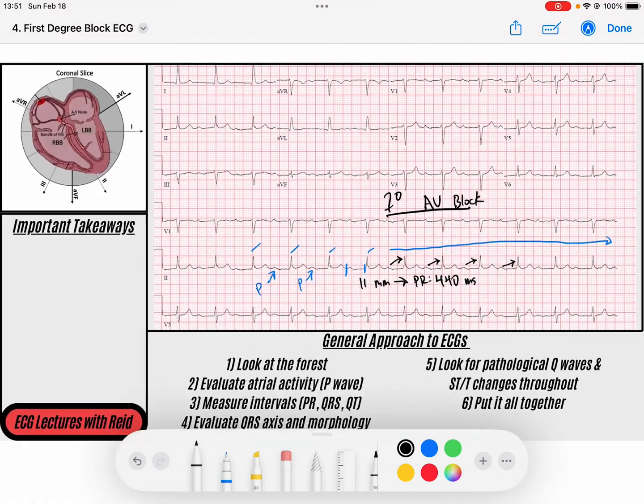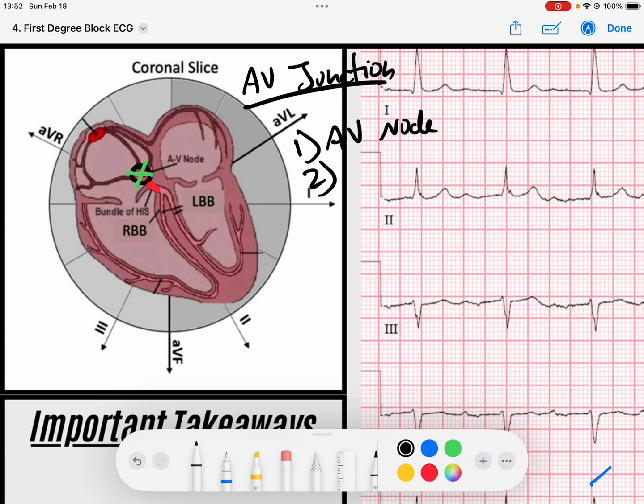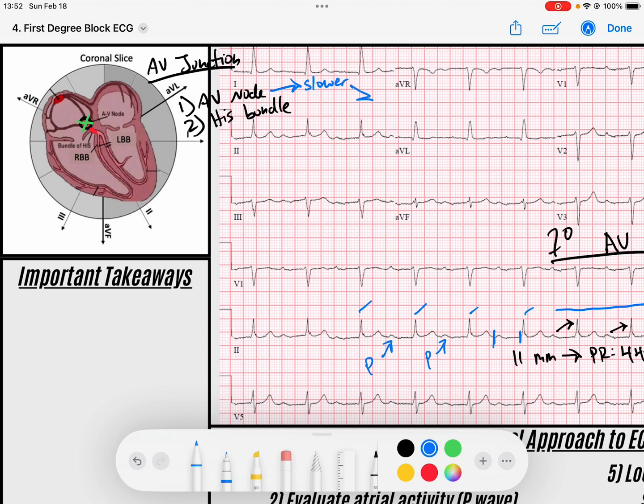So this concept of anatomy where the AV node itself has decremental conduction and this His bundle has all or nothing conduction is going to be really important. So remember the His bundle doesn't slow down the signal when it gets diseased. So the block in a first degree block is at the AV node proper. So remember the AV junction contains two structures. One, the AV node, and two, the His bundle. This is really important because a first degree block means that the AV node is slower than usual, but it works every time. And so that is where we get disease for our first degree AV block.